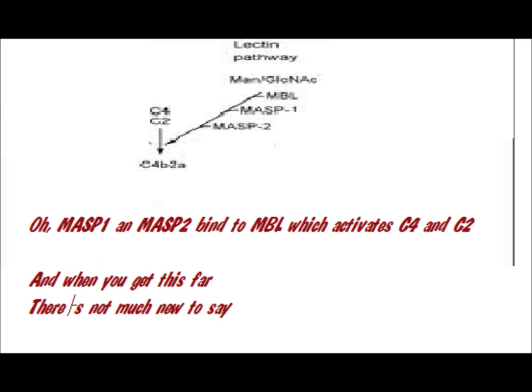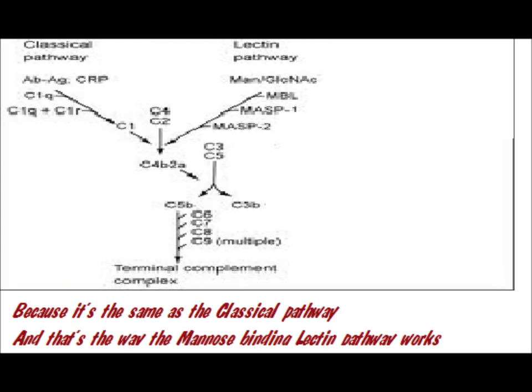MASP1 and MASP2 find MBL and cleave C4 and C2. And once you get that far, there's not much new to say, because it's the same as the classical pathway. And that's the way the mannose-binding lectin pathway works.